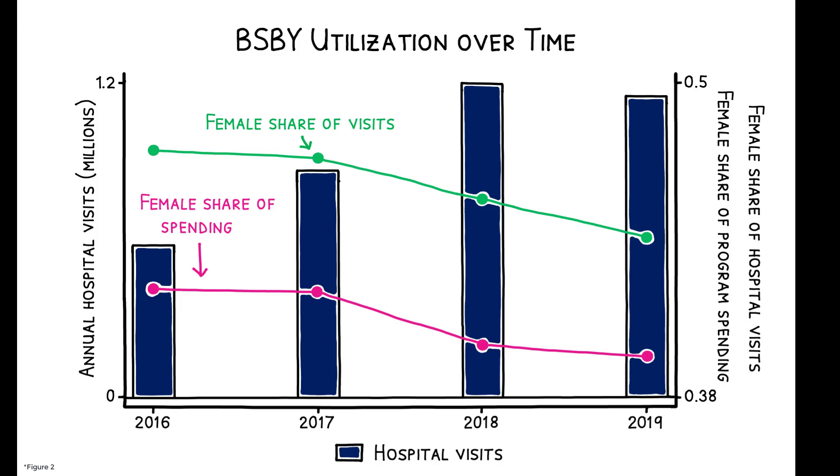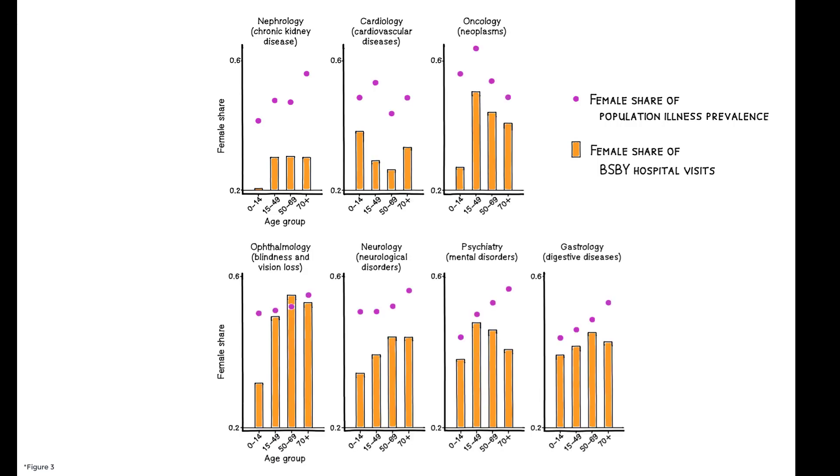These gender gaps cannot be explained by gender differences in illness prevalence. Here we see that females account for 48 percent of people 15 years and older with chronic kidney disease in the population, but only 30 percent of BSBY hospital visits for the same age group and condition. The same pattern holds across other medical specialties.